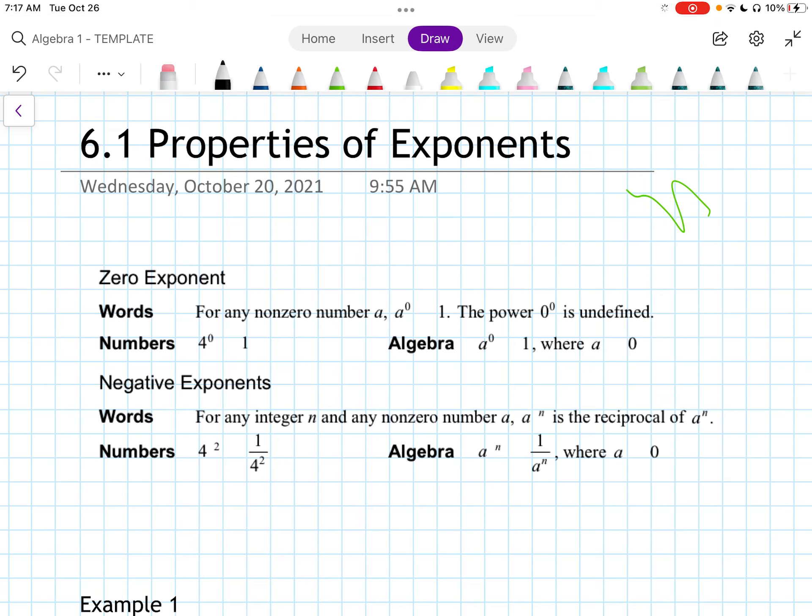So in words, it says for any non-zero number A, A to the 0 equals 1. The power 0 to the 0 is undefined, right, so you can't have 0 to the 0.